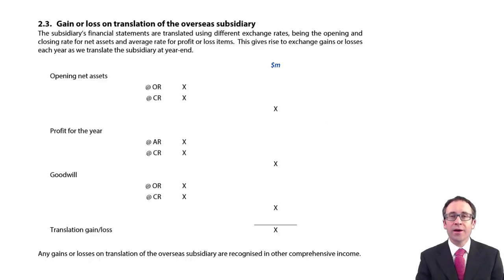Okay, so to go through and complete the chapter, we're going to look at this gain or loss on translation of the overseas subsidiary and look at why it arises and where it appears in the financial statements.